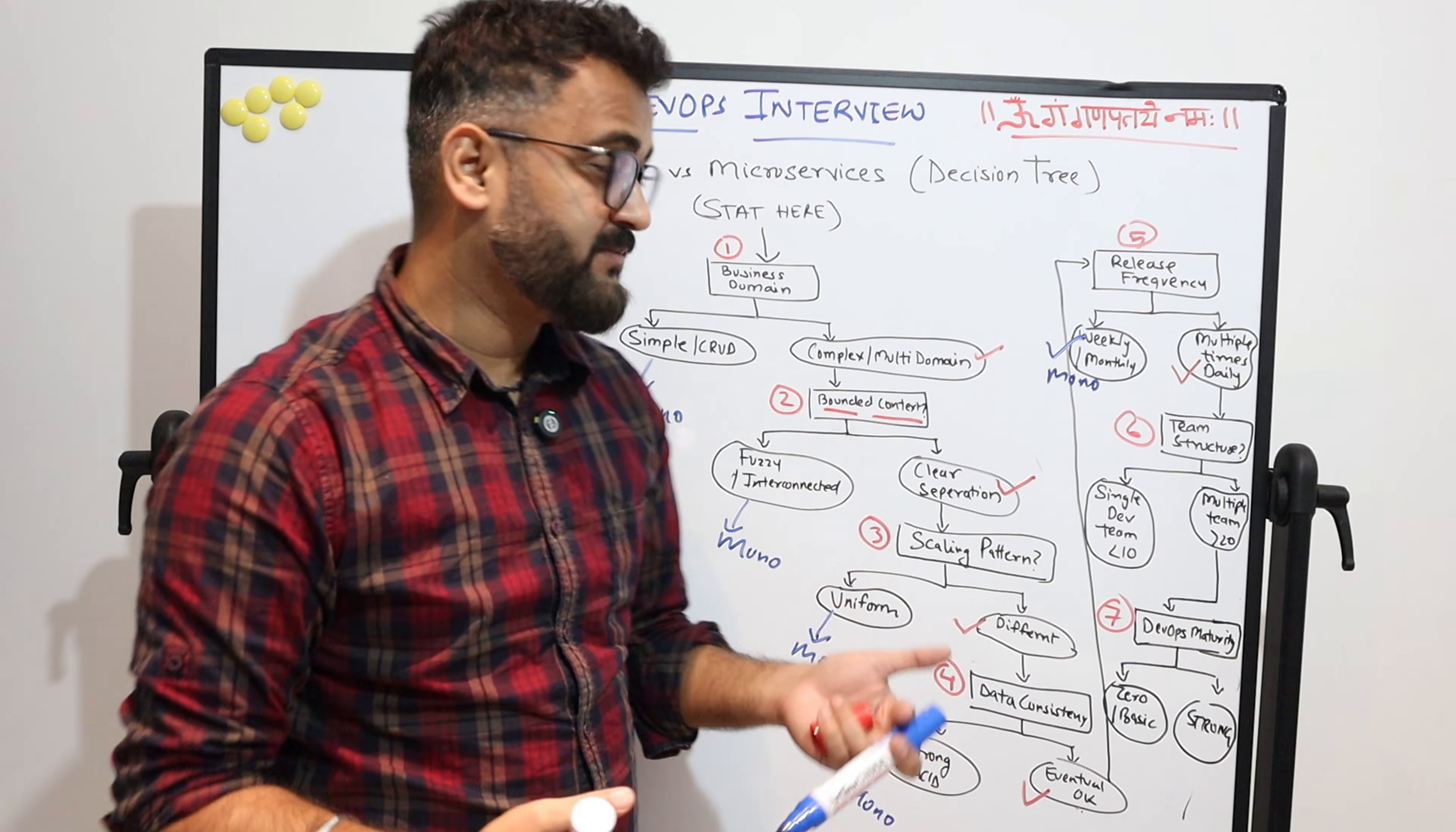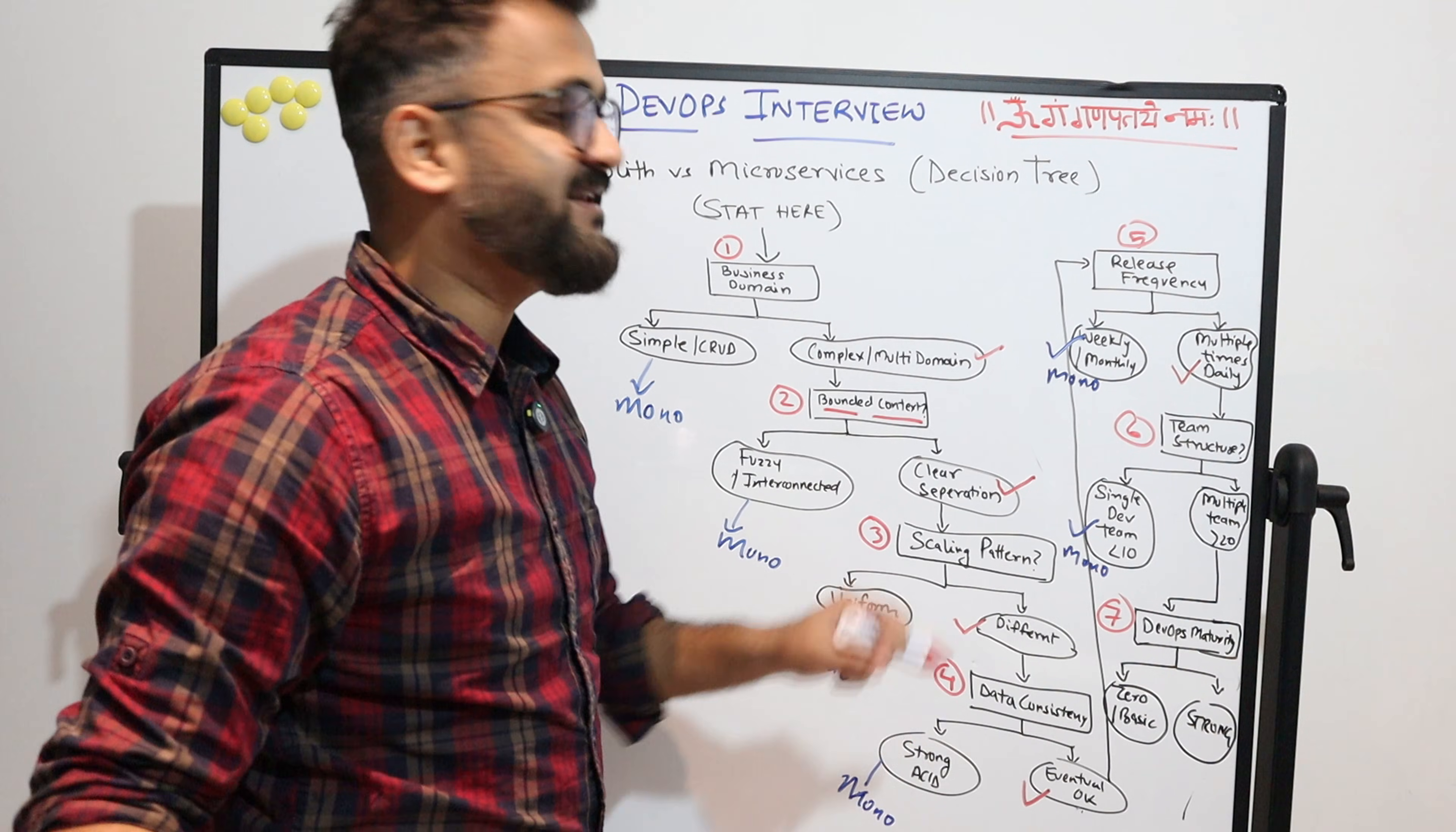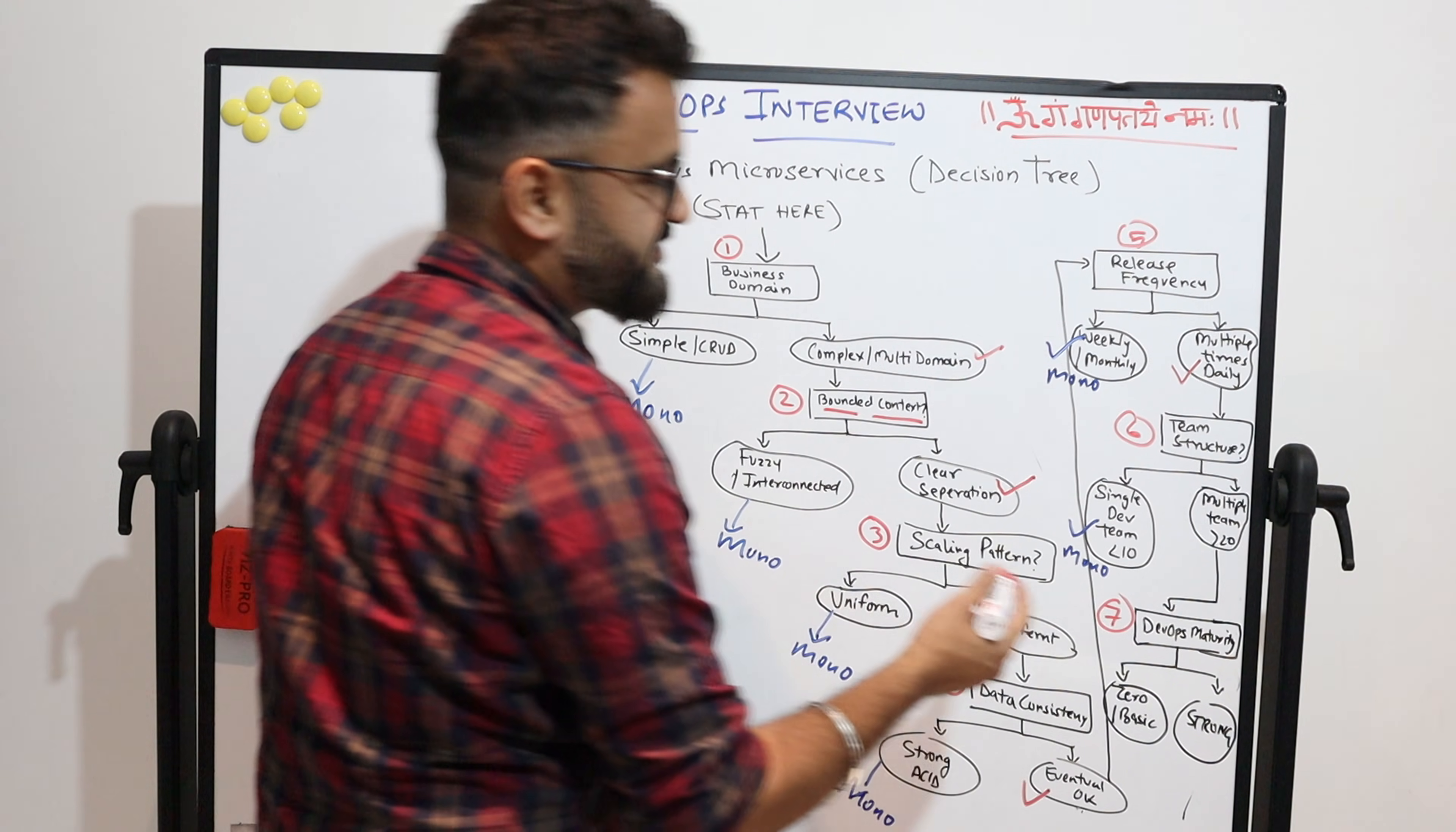But if it is multiple times daily—like for example Netflix releases so many shows daily, Uber, all these kind of applications which need so many transactions, so many releases every day—then obviously it leans towards microservices.